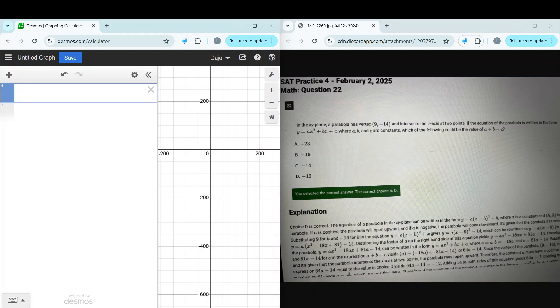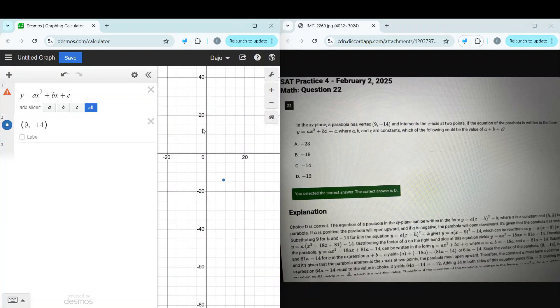First of all, what is a vertex? A vertex is the lowest or highest point in a parabola, and a parabola can be rewritten in the standard form as given: y = ax² + bx + c. Now there are certain properties of the standard form which you need to apply here. We know the vertex is at (9, -14) and we know that it intersects at two points, which means it has to go like this. It has to open up.